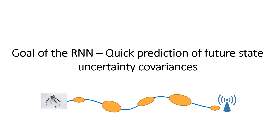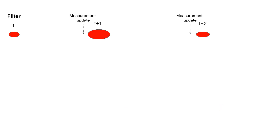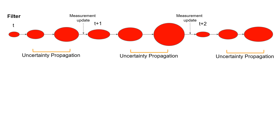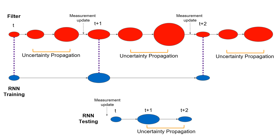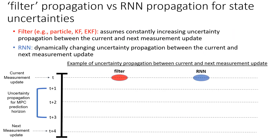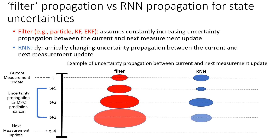The goal of the RNN is to allow a quick prediction of future state uncertainty covariances. This is achieved by modeling and predicting the uncertainty estimates of a filter, such as a particle filter or an EKF. Typical filter equations estimate uncertainty upon receiving a measurement update, and uncertainty propagation increases when no further measurements are received. The RNN models the behavior of uncertainty at each measurement update during training, then propagates and predicts uncertainty for future time steps during testing. Ultimately, the RNN provides uncertainty values that dynamically increase or decrease at each time step in the MPC prediction horizon, more realistically modeling localization uncertainty based on the robot's position in the map — unlike typical filter equations that assume uncertainty always increases when propagated for future unmeasured time steps.